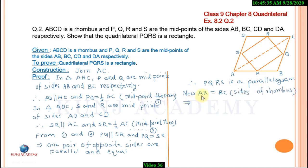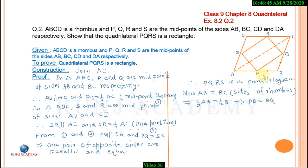P is the midpoint of AB, therefore PB equals half of AB. Similarly, Q is the midpoint of BC, therefore BQ equals half of BC. In triangle PBQ, since PB equals BQ, angles opposite to equal sides are equal, so angle 3 equals angle 4.